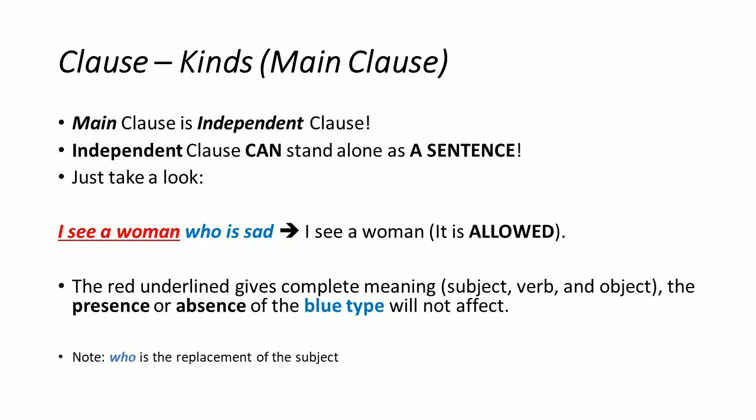If you remove 'who is sad' and change it to just 'I see a woman,' that is fine — it is allowed. It is a main clause and it is complete enough to be a meaningful sentence, because there is subject 'I,' verb 'see,' and object 'a woman.' The presence or absence of 'who is sad' will not affect the completeness of the sentence. Note that 'who' there serves as a substitute for the subject 'the woman.'